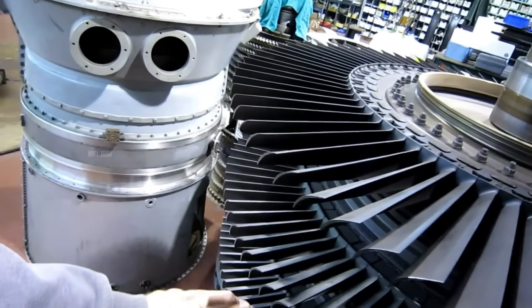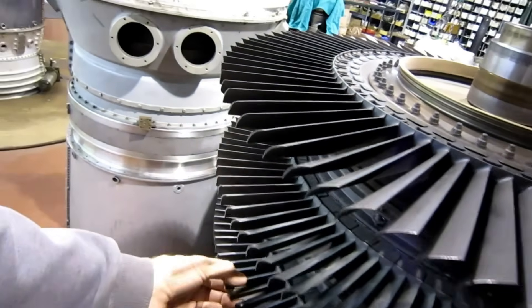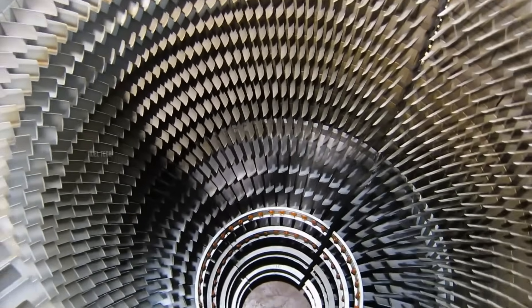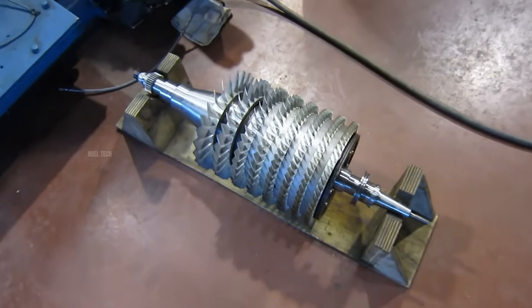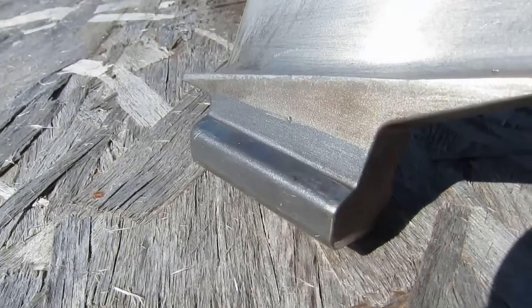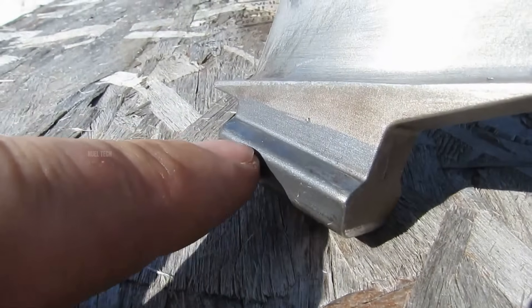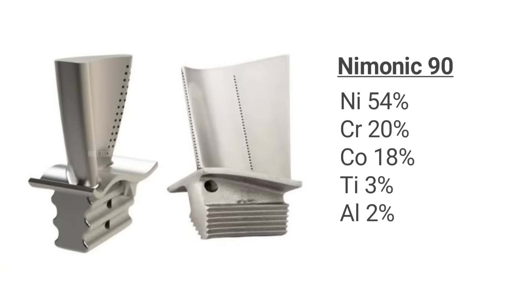Jet engine turbine blades are not made from steel, but from special nickel-based alloys known as super-alloys. One commonly used super-alloy is Nymonic, a product of Special Metals Corporation. Nymonic is composed of approximately 54% nickel, 20% chromium, and other elements such as aluminum and titanium.